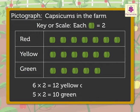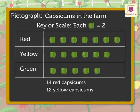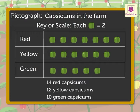Accordingly, there are 12 yellow capsicums and 10 green capsicums on the farm. Hence from the pictograph we can say there are 14 red capsicums, 12 yellow capsicums, and 10 green capsicums on the farm. From this information we can say how many capsicums there are in all, whether red capsicums are more than yellow, and so on. Hence we can obtain a lot of information from a pictograph.